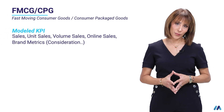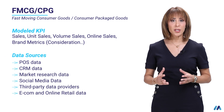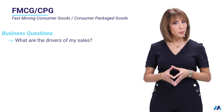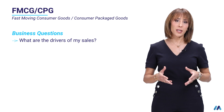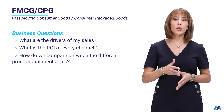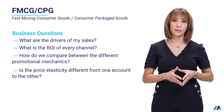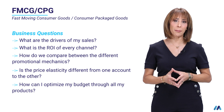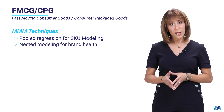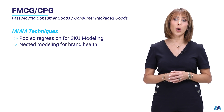Let's start with FMCG or CPG — consumer packaged goods or fast-moving consumer goods. In this vertical we generally model volume sales, and the data generally comes from Nielsen or IRI. The business questions we ask in the context of CPG or FMCG brands are: what are the drivers of my sales, what is the ROI of every single channel, how do we compare different promotional mechanics, is the price different from one account to another, and how can I optimize my budget across all the products within a brand?